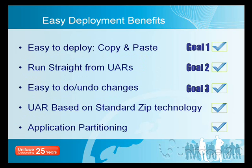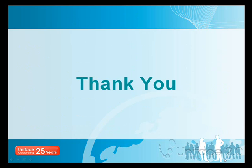To summarise, the benefits of easy deployment are as follows. Applications are easy to deploy — it's as simple as copying and pasting the UAR file and adding a line to your resources section, achieving the first goal. Running applications straight from the UAR is supported, achieving the second goal. It is also easy to apply and undo changes at deployment time: copy and paste the UAR file and add the line to the resources section; to undo, simply remove the line. The UARs are based on standard zip technology, so you can unzip one if needed. The whole mechanism allows for simple application partitioning. Thank you.